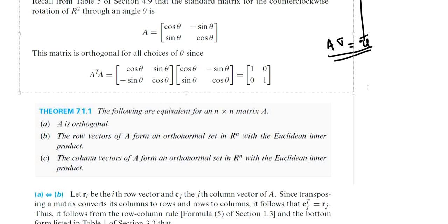Now, coming to the theorem: the following are equivalent for an n by n matrix A. A is orthogonal; equivalently, the row vectors of A form an orthonormal set in Rn with the Euclidean inner product; and the column vectors of A form an orthonormal set in Rn with the Euclidean inner product.